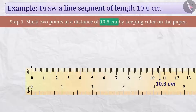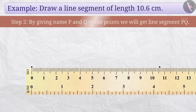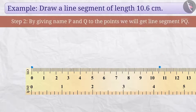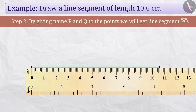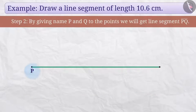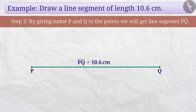Keep in mind to carefully observe the line. Step 2: We will connect the obtained points with a straight line. By giving the names P and Q to the points, we will get line segment PQ.